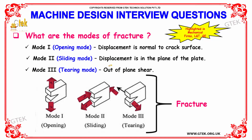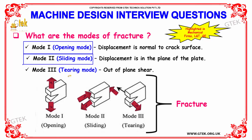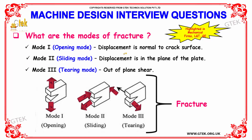What are the modes of fracture? There are three modes. Mode 1 is the opening mode, where displacement is normal to the cracked surface. Mode 2 is the sliding mode, where displacement is in the plane of the plate. Mode 3 is the tearing mode, which involves out-of-plane shear.